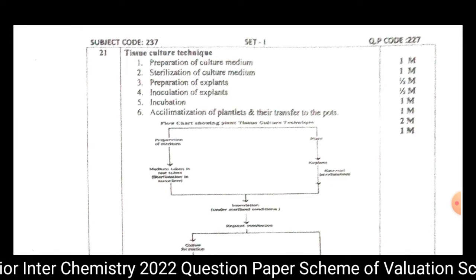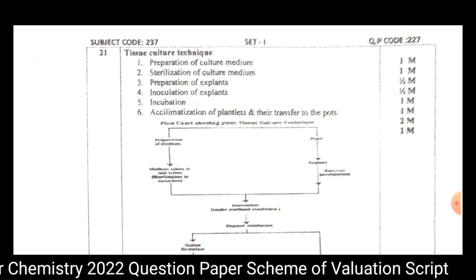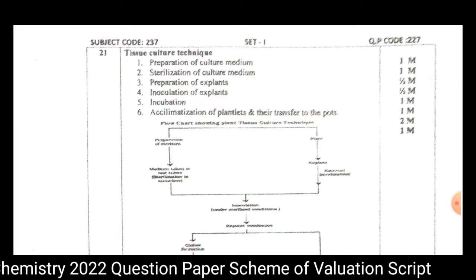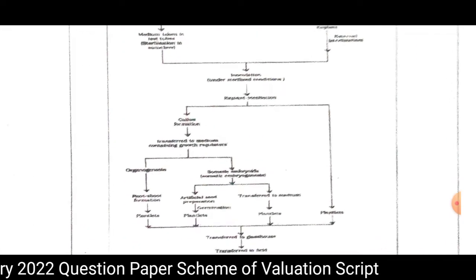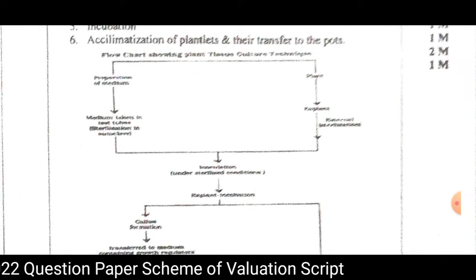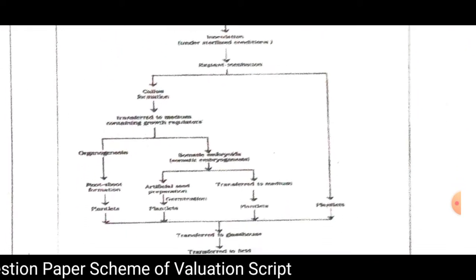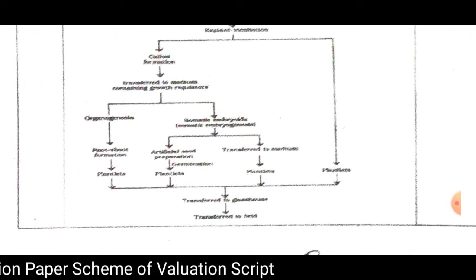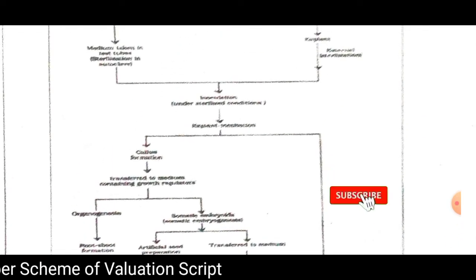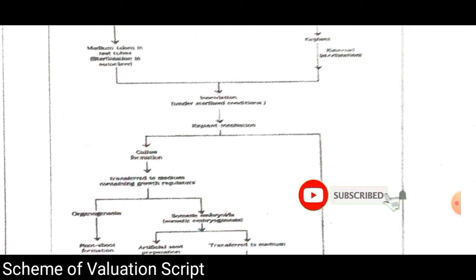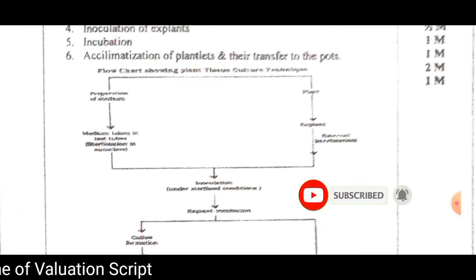If you choose the flowchart option, the advantages level carries 1 mark and the flowchart itself carries 2 marks, for a total of 2 marks for the flowchart section. Consider the two marks carefully for the flowchart.